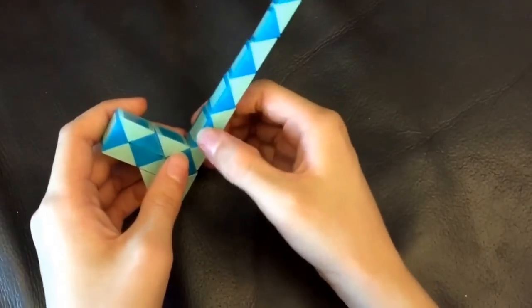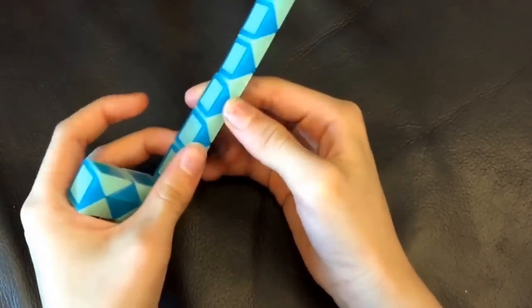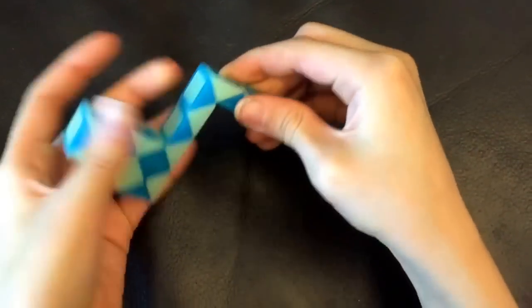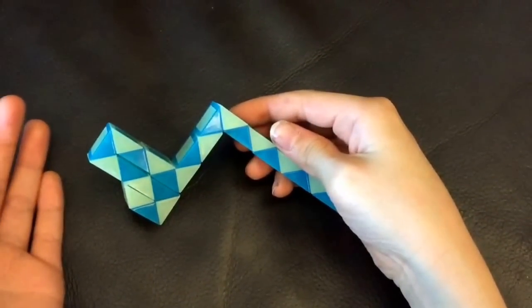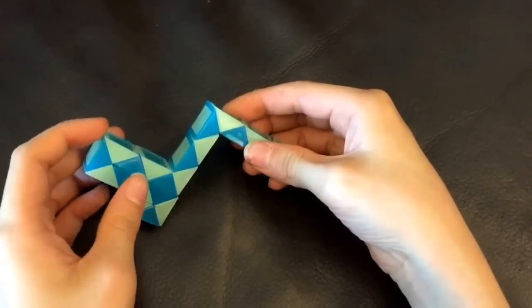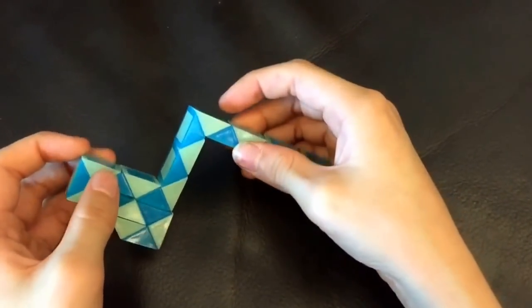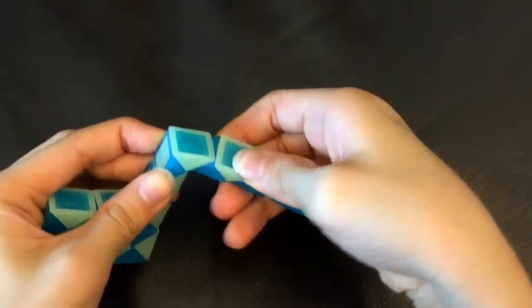Next, you're going to count one, two, three, four, and then this white one is going to go down. And then this blue one is going to go left.